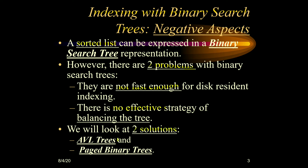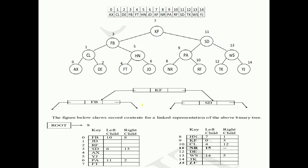These are the two problems with binary search trees, so we have another solution — AVL trees and paged binary trees. We are trying to overcome the demerits of binary search trees. Now we will look at AVL trees and paged binary trees. Here is an example of a binary search tree, represented as usual, which we have already studied.